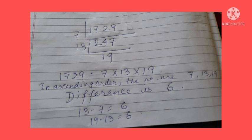So the prime factors are 7, 13, and 19. Arranged in ascending order they are 7, 13, and 19. You see in each case the difference is 6 — that means 13 minus 7 is 6, and 19 minus 13 is also 6.